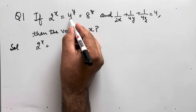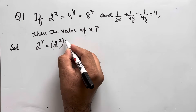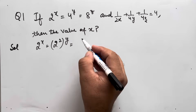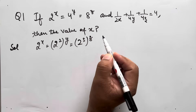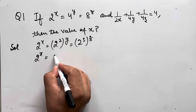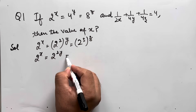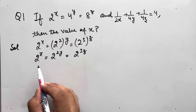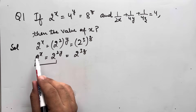So (2^2)^y = 2^(2y) and (2^3)^z = 2^(3z). This gives us 2^x = 2^(2y) = 2^(3z). Now, from the first two terms, as the base is the same, the exponents will be equal.